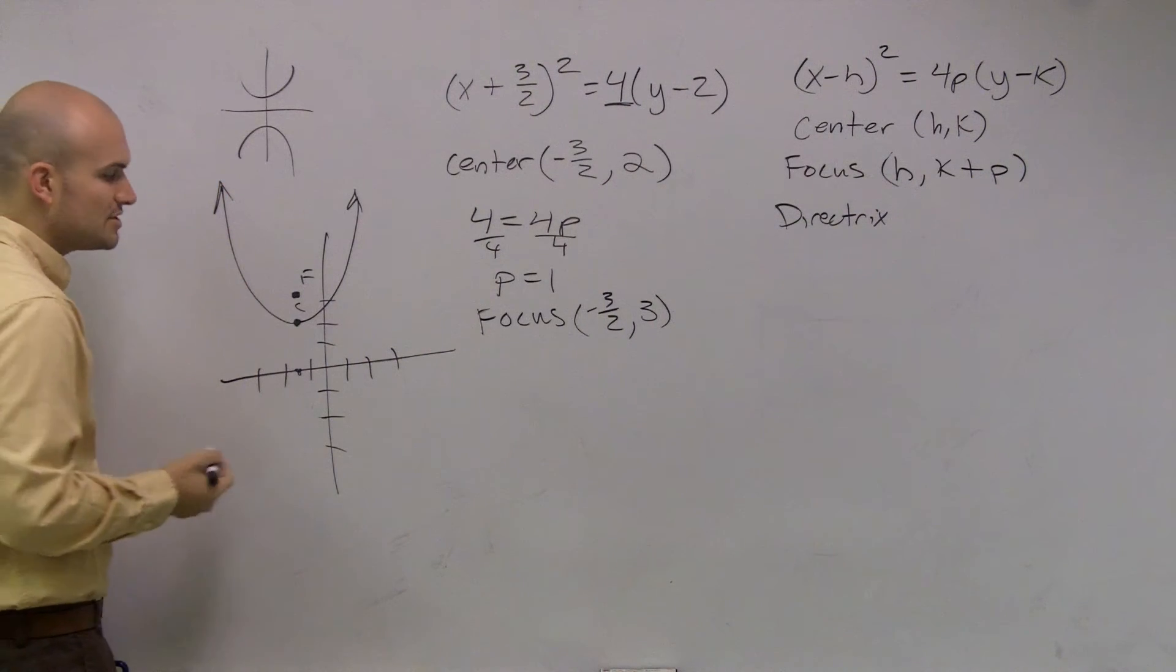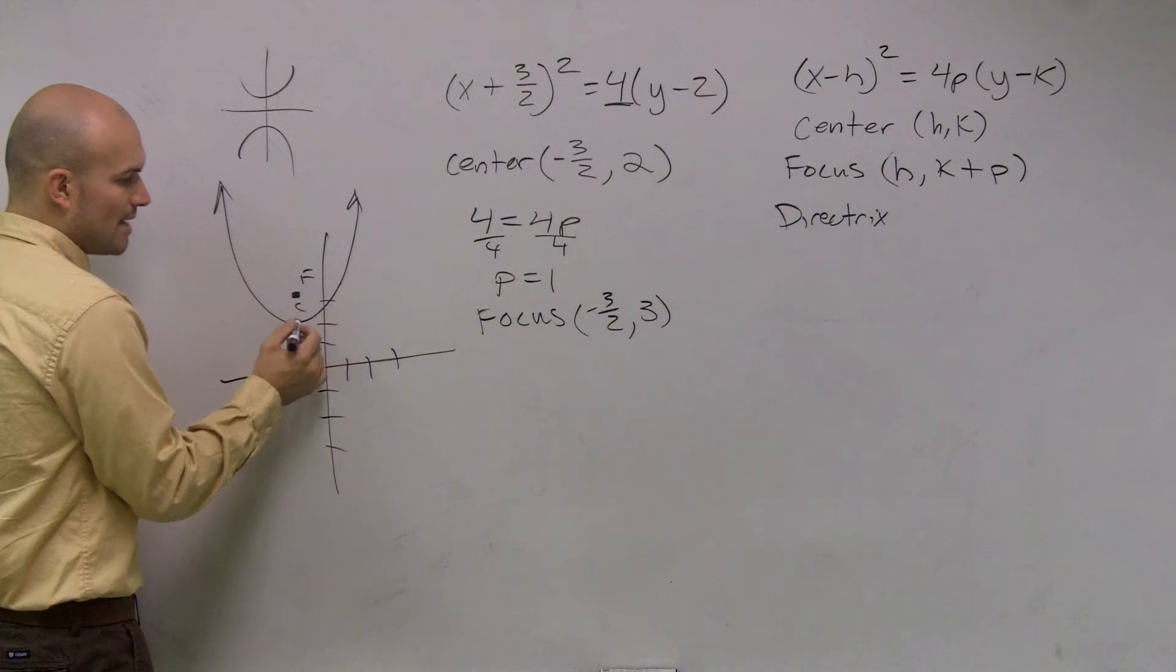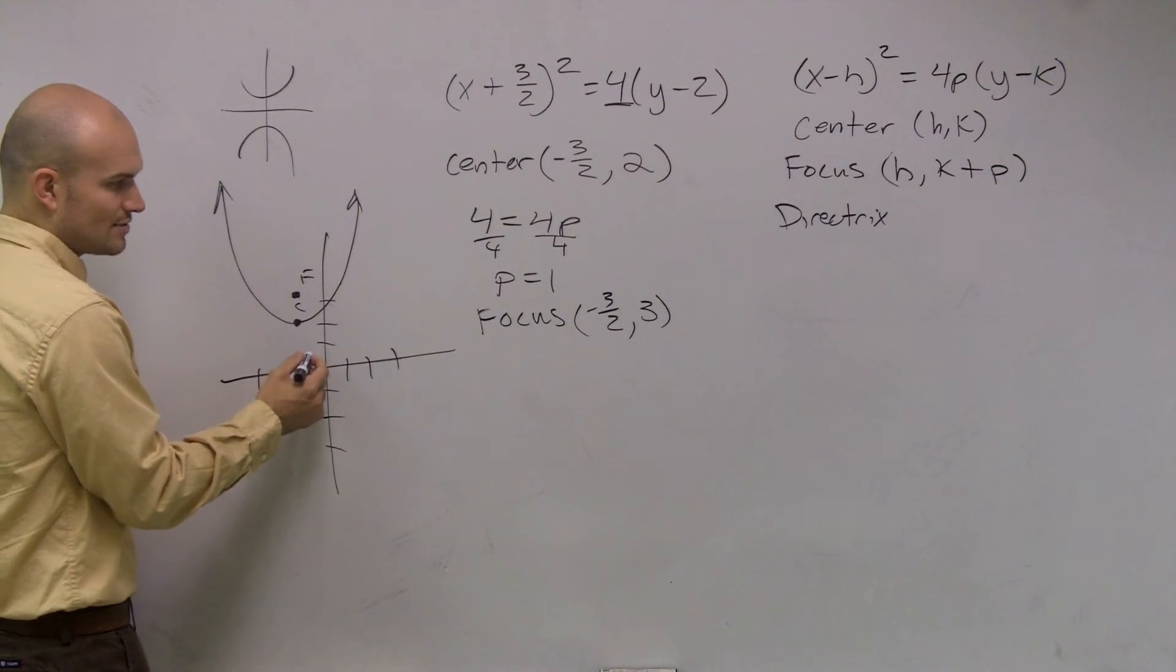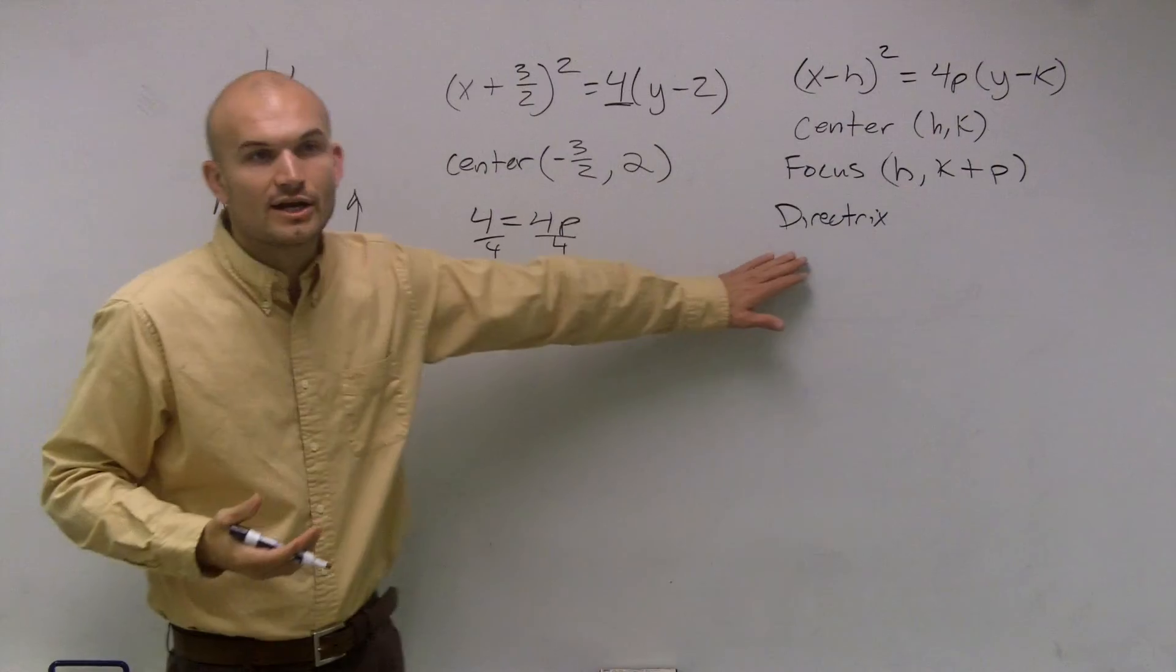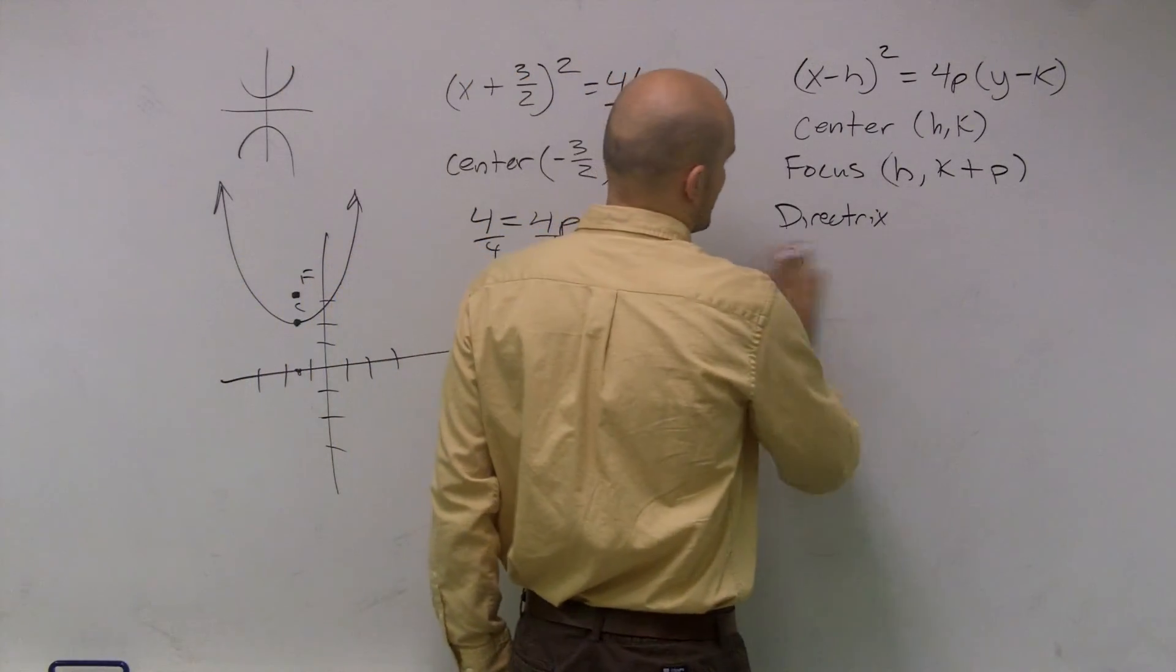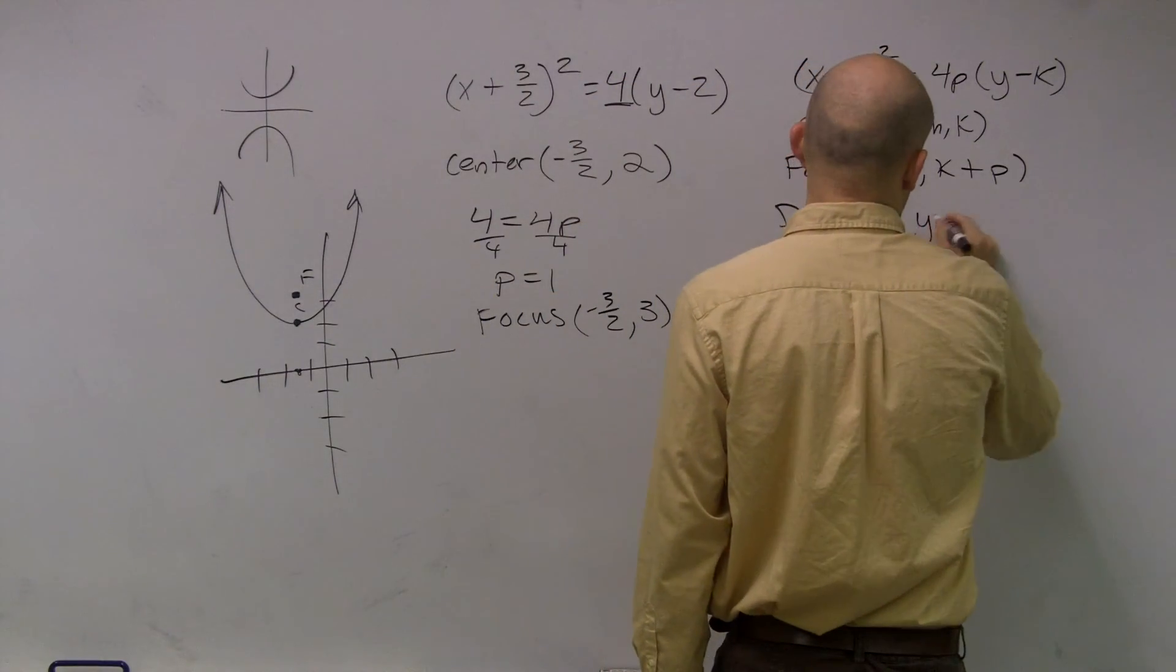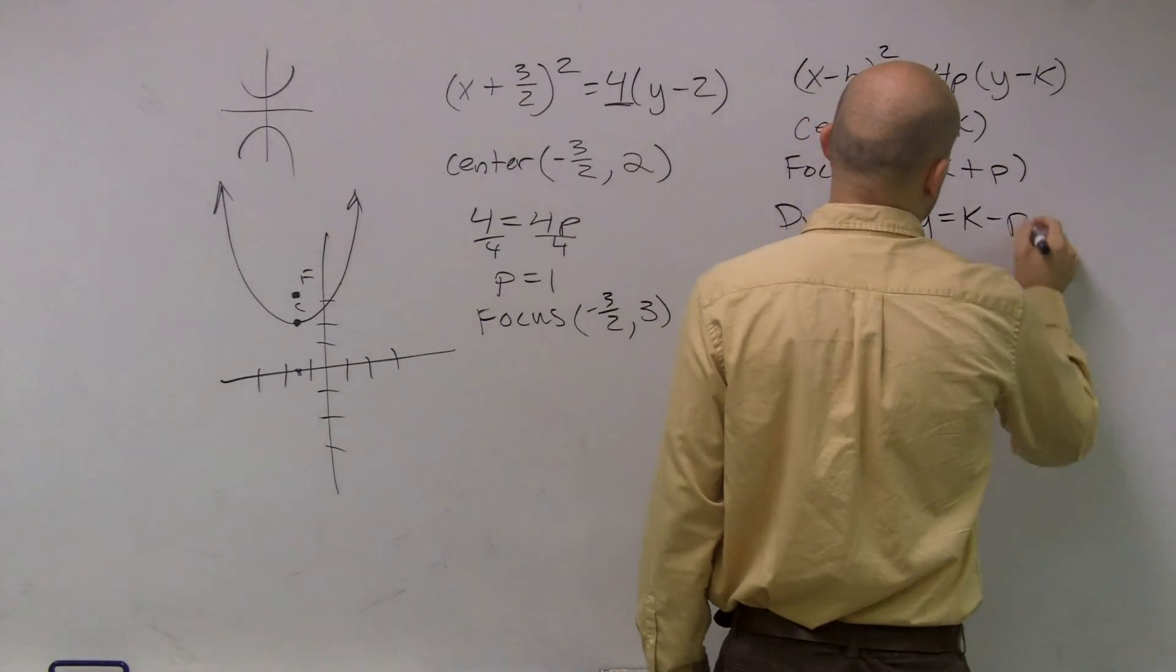Remember the definition of a parabola says the distance from any point on a parabola to its focus is that same distance down to its directrix. So the way that we find our directrix when we have a vertical axis of symmetry, directrix is going to be y equals your k value minus p.